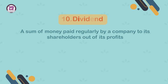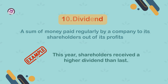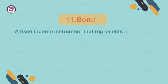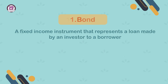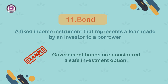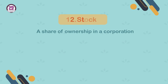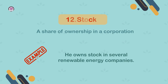10. Dividend. A sum of money paid regularly by a company to its shareholders out of its profits. Example: this year shareholders received a higher dividend than last. 11. Bond. A fixed income instrument that represents a loan made by an investor to a borrower. Example: government bonds are considered a safe investment option. 12. Stock. A share of ownership in a corporation. Example: he owns stock in several renewable energy companies.